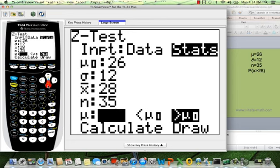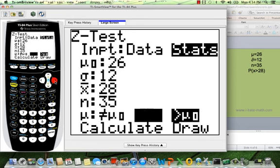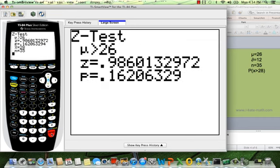Now here you have three choices. This is when mu is not equals to the claim. We're going to talk about that later. This is less than. Since our problem was greater than, immediately just click enter. And look, you have two choices. Either you can calculate it or you can draw it. Let's calculate it right now and let's see what we get.